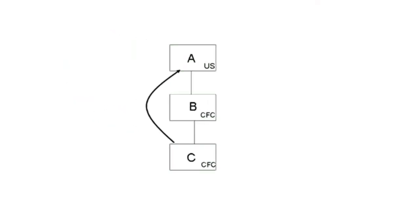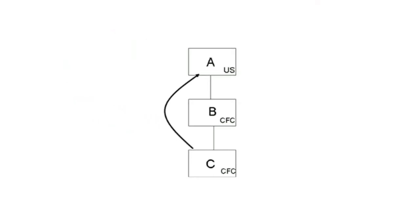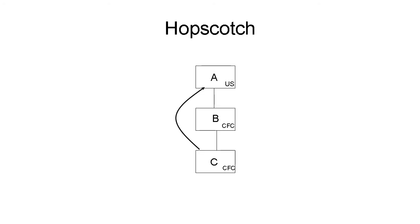Thus, if Al, a U.S. person, owns Beta, a CFC, which owns Capricorn, also a CFC, then if Capricorn invests E&P in U.S. property, Al will have a Section 956 inclusion. Capricorn's earnings hopscotch, skipping Beta, and going directly to Al.